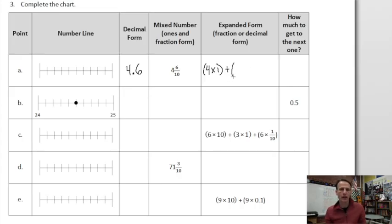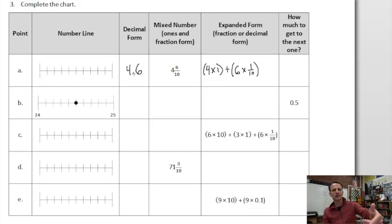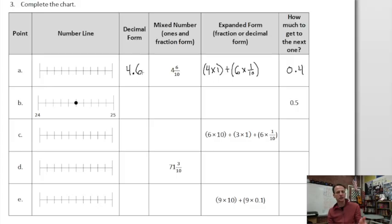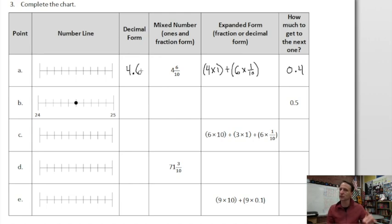For expanded form, what's in the ones place? Four of those, so four times one. We'll do this one in fraction form: how many one-tenths do we have? Six of them — six times one tenth. How much to get to the next one? We need four tenths more to get from four and six tenths to five. I'll write that as a decimal — 0.4.